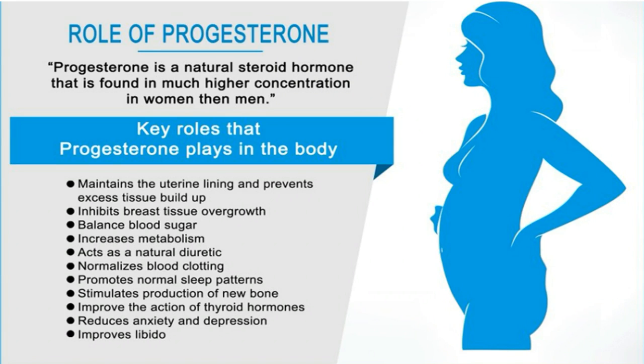Progesterone is one of two female sex hormones, the other being estrogen. Its main functions are regulating menstruation and supporting pregnancy in the female body.